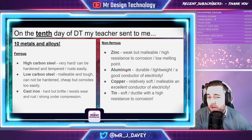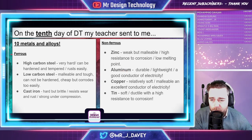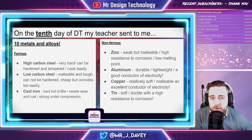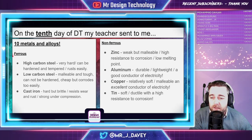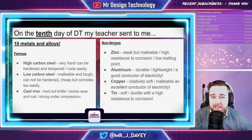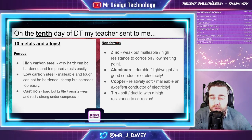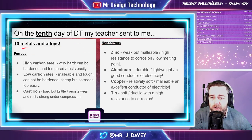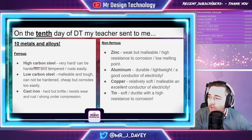Ferrous metals often corrode and rust in the weather; they contain iron and most often have magnetic properties. Non-ferrous metals tend not to rust and tend not to contain iron — there are a few exceptions, but essentially one type is magnetic and rusts, and the other is not magnetic and does not rust.